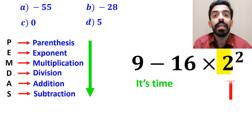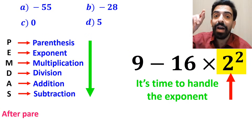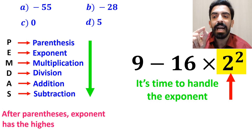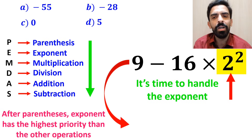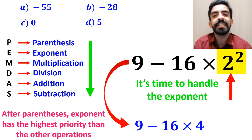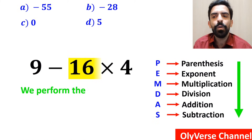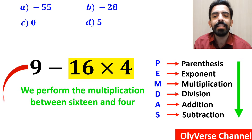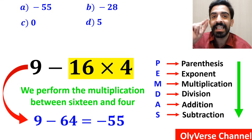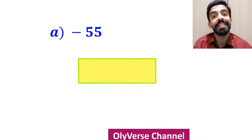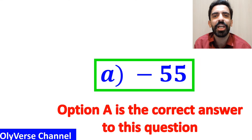In the following step, it's time to handle the exponent. According to the PEMDAS rule, after parenthesis, the exponent has the highest priority compared to the other operations. So this expression becomes 9 minus 16 multiplied by 4. In the final step, we perform the multiplication between 16 and 4 and simplify this expression to 9 minus 64, which finally gives us the answer negative 55. Option A is the correct answer to this question.